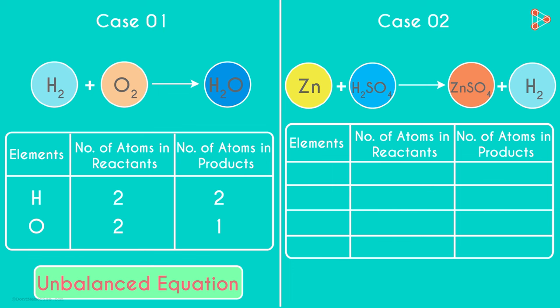So did you make a list of the elements present in this equation? We have Zinc, Hydrogen, Sulphur and Oxygen.